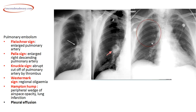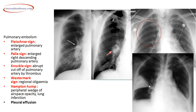After oligemia and decreased blood supply, an infarct results — usually a wedge-shaped infarct known as Hampton's hump. To summarize: Fleischner sign = enlarged pulmonary artery from intraluminal thrombus; knuckle sign = complete cutoff from thrombus; Westermark sign = pulmonary oligemia distal to obstruction; Hampton's hump = wedge-shaped infarct. Pleural effusion can also be present.